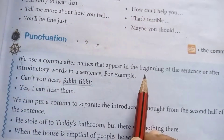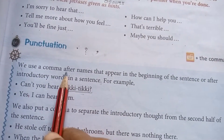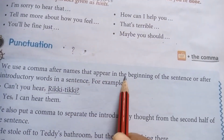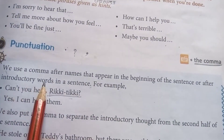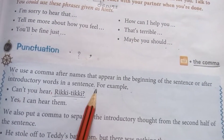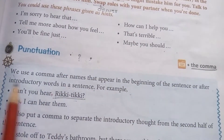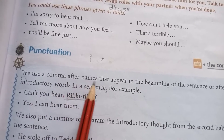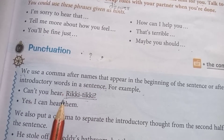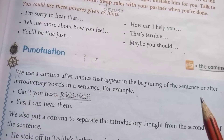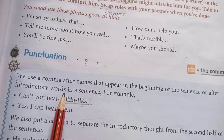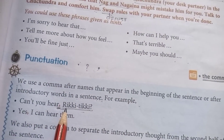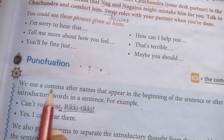Let us read the rule. We use a comma after names that appear in the beginning of the sentence, or after introductory words in a sentence. For example, see the introductory part mentioned in this sentence — we have to give the comma. After the names that appear in the beginning, or after the introductory words in a sentence, we should have to give a comma. For example, 'Can't you hear?' — here the comma is given. And Rikki-Tikki — after Rikki-Tikki, give a comma.